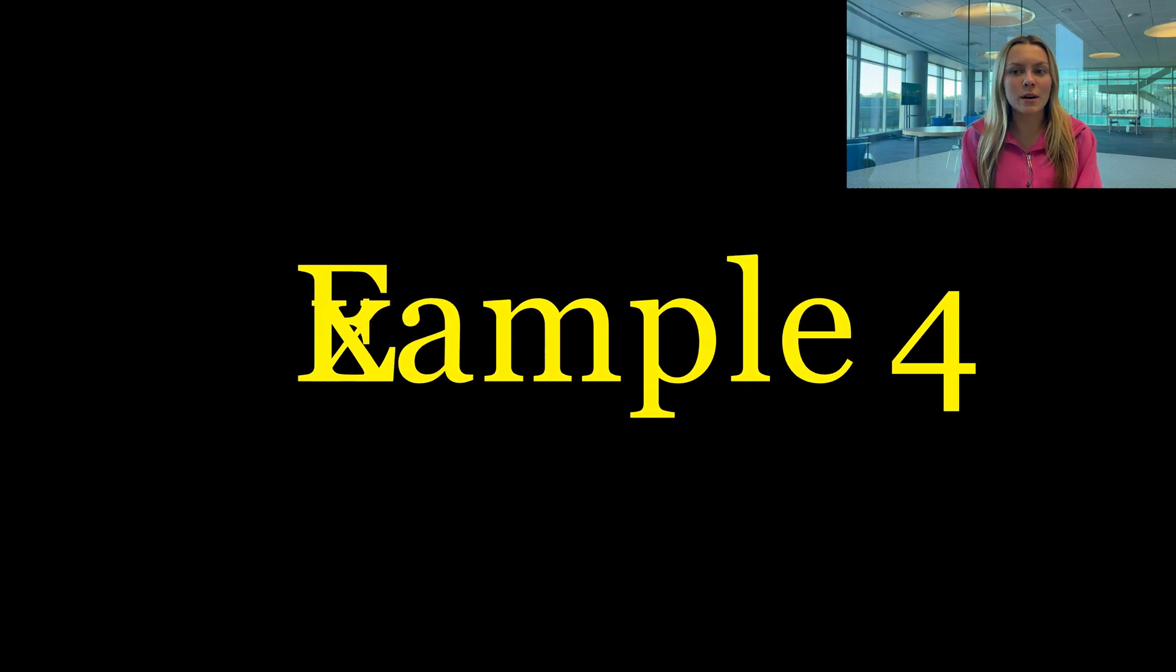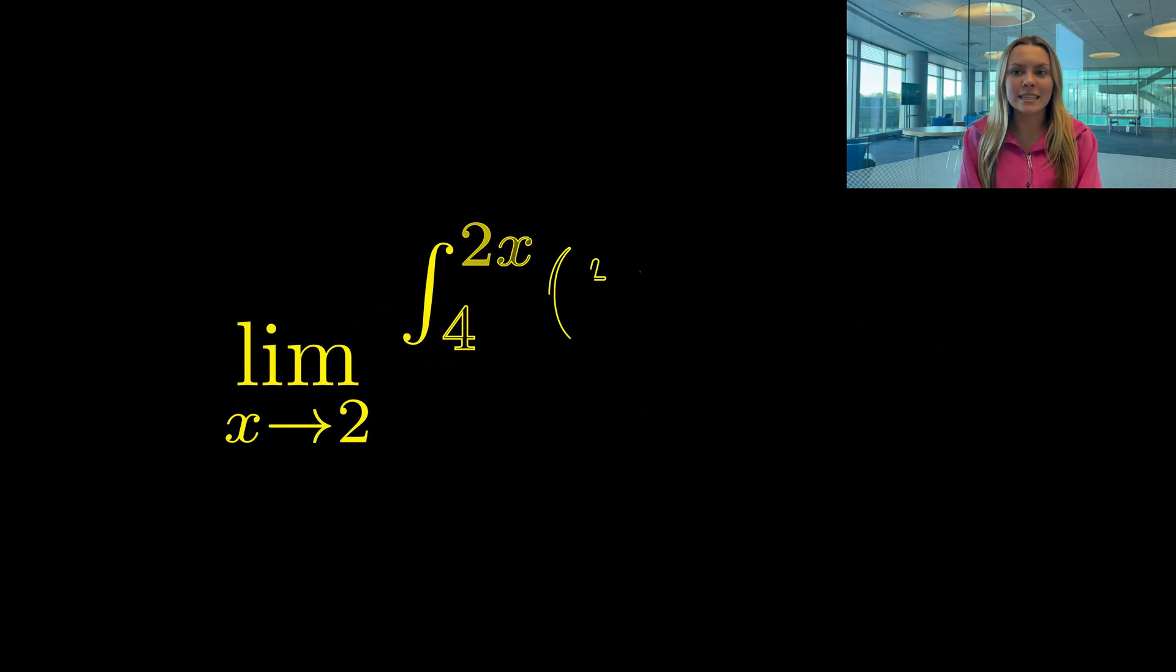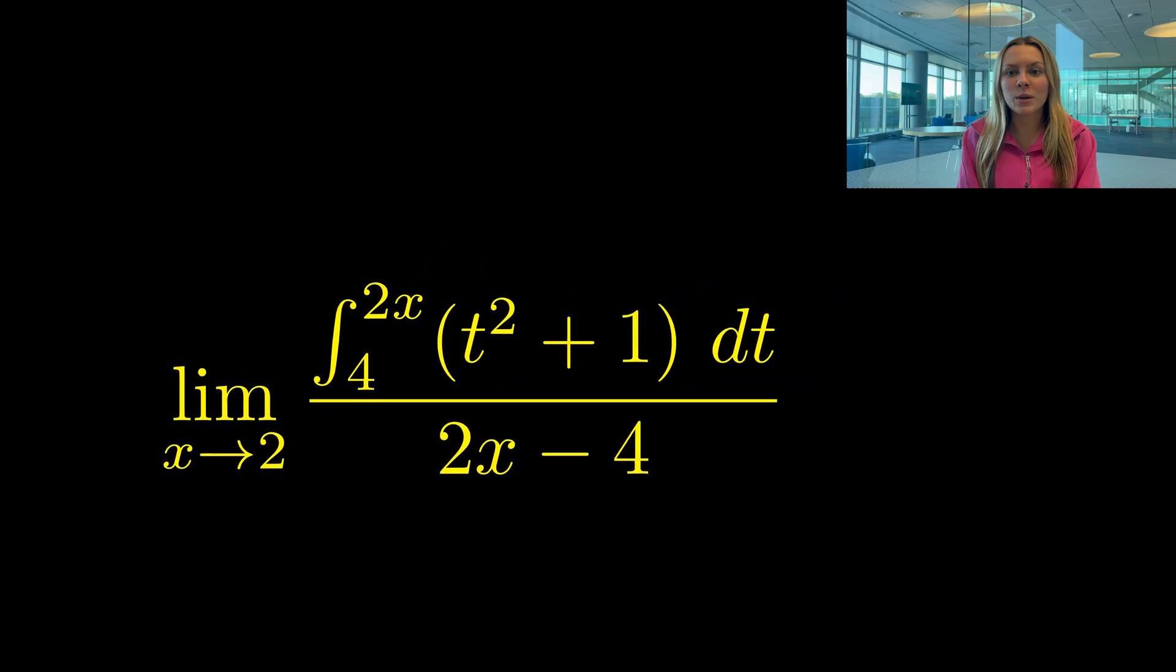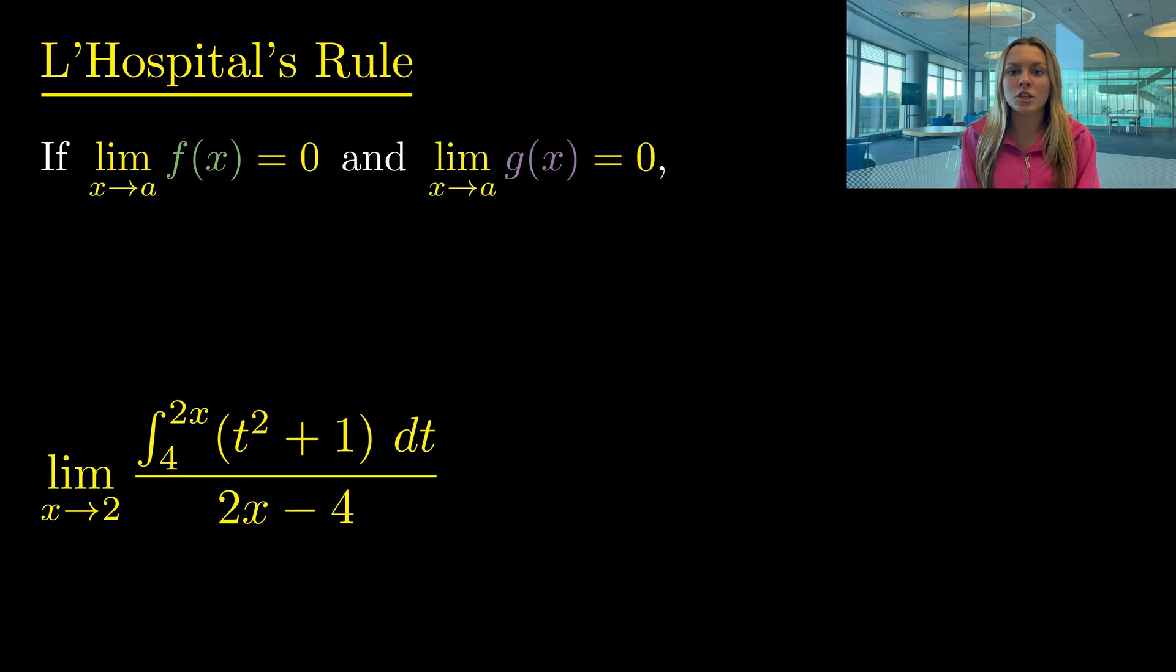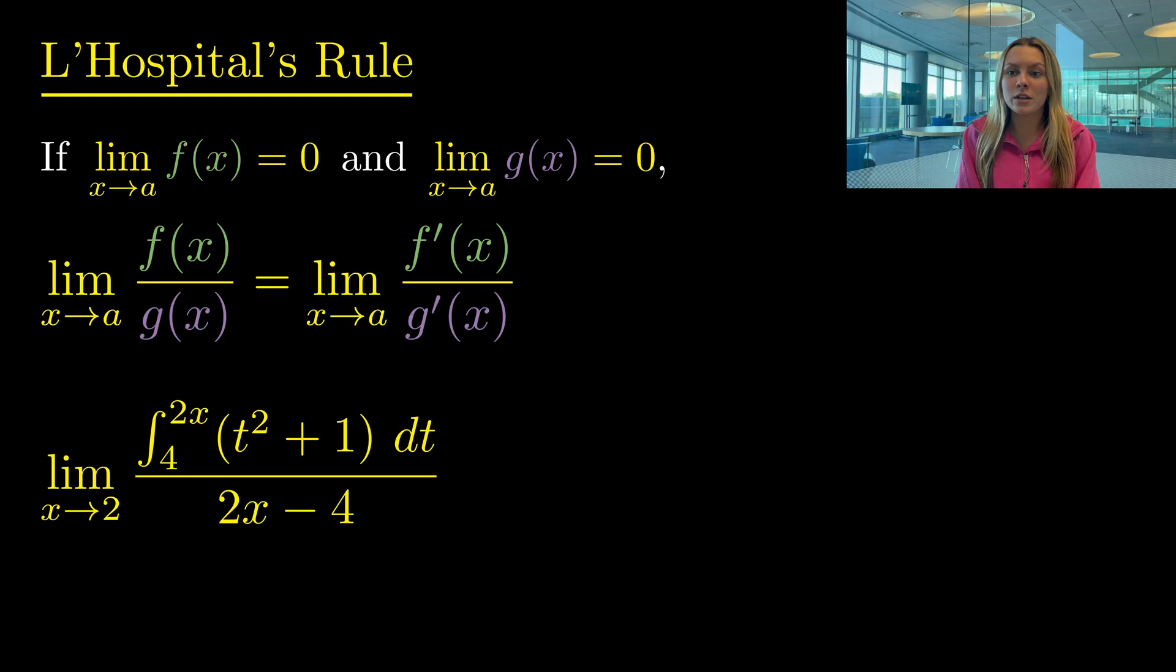Now let's use FTC in questions that involve more than just the derivative. So we're going to try to find this limit. And like with most limits, we are going to use L'Hôpital's rule, which says that if the limit of the numerator and the limit of the denominator of our function are both 0, then the limit of their ratio is the same as the limit of the ratio of their derivatives.